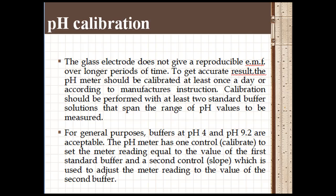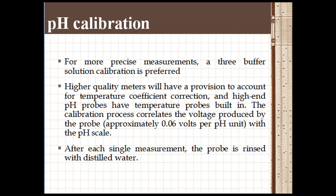For precise measurement, a three buffer solution calibration is preferred. Higher quality meters will have a provision to account for temperature coefficient correction, and pH probes have a temperature probe built into the electrode. The calibration process correlates the voltage produced by the probe with the pH scale.